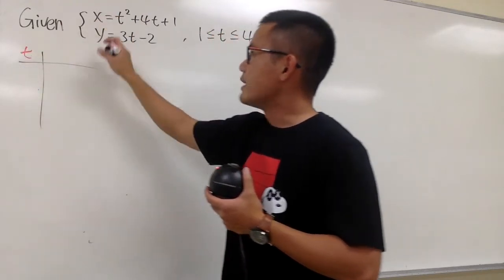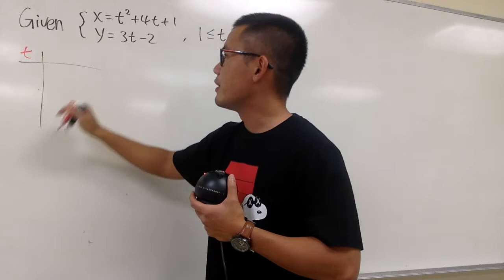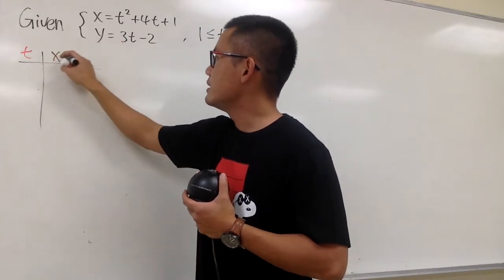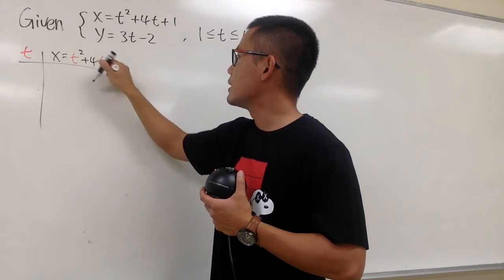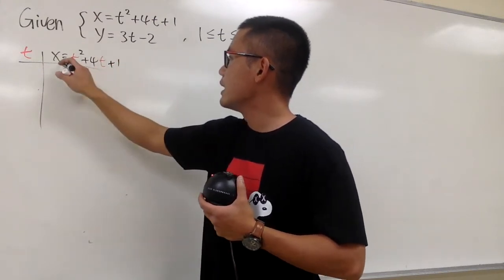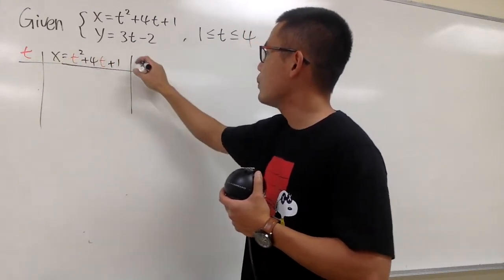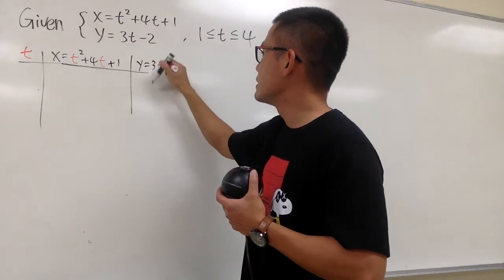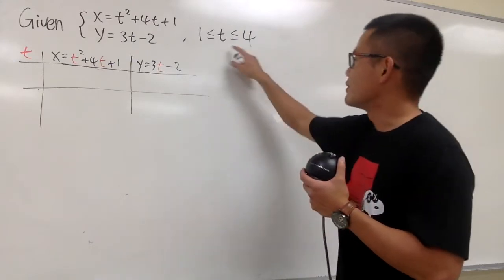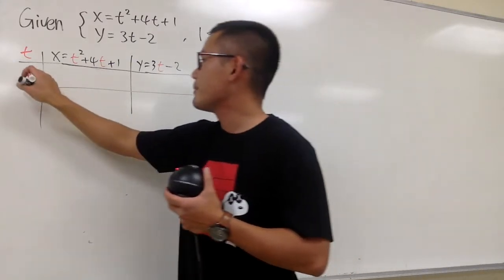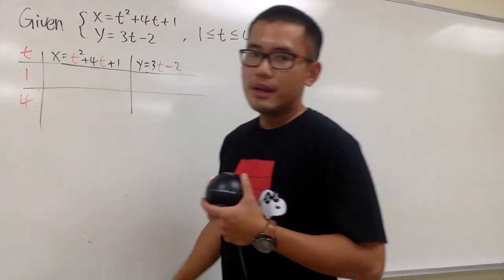Anyway, both x and y are depending on t, so I'll put on t right here, and then we know x is equal to t squared plus 4t plus 1, and then we have the y, y is equal to 3 times t minus 2. And as I said, I just want to plug the endpoints right here, like the 1 and the 4, the ending time, which is 1 and 4.